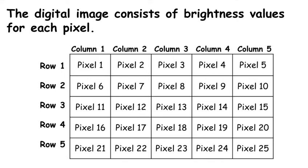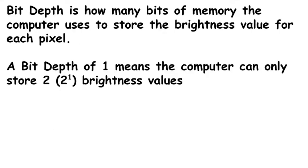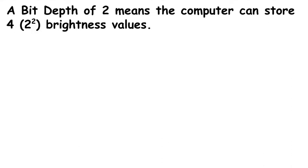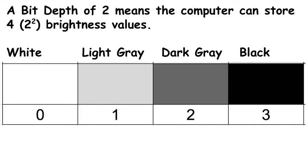Our digital image file consists of the brightness value — the shade of gray — for each pixel. The number of shades of gray stored depends on the number of bits of memory the computer uses for each pixel, which we call the bit depth. A bit depth of 1 means only 1 bit is used, giving 2 to the 1, or just 2 brightness values: 0 and 1 — only white and black. A bit depth of 2 gives 2 to the 2, or 4 shades of gray: white, light gray, dark gray, and black.